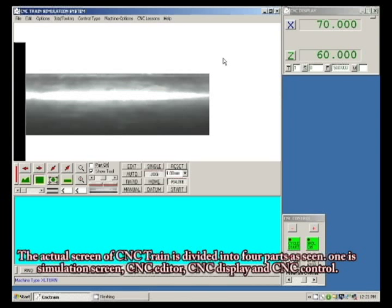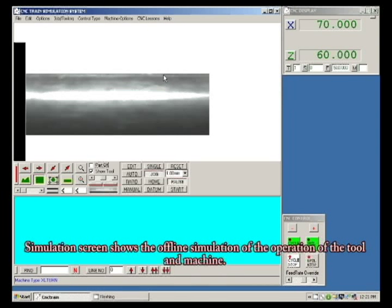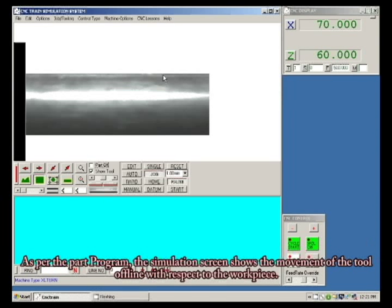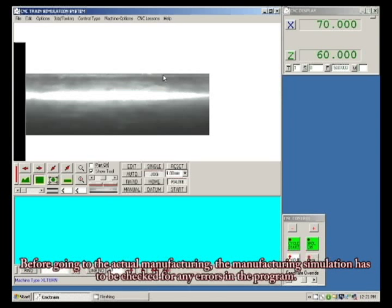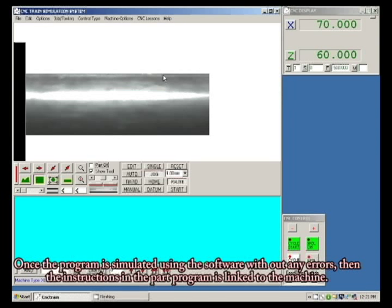The actual screen of CNC train is divided into four parts: simulation screen, CNC editor, CNC display, and CNC control. The simulation screen shows the offline simulation of the operation of the tool and machine. As per the part program, the simulation screen shows the movement of the tool offline with respect to the workpiece. Before going to actual manufacturing, the simulation has to be checked for any errors in the program.